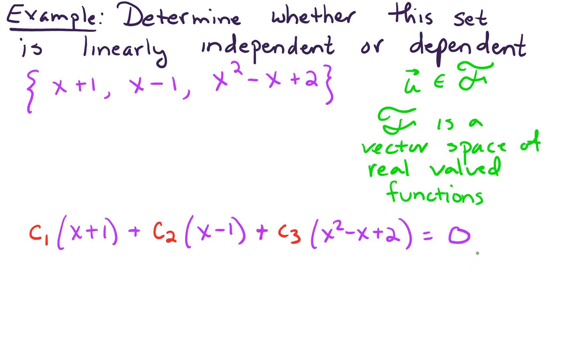Keep in mind, since we're in the space of real valued functions, the zero vector really means the zero function. So let's write that out. This is the zero function. The zero vector is the function f of x that maps all inputs to an output of zero.